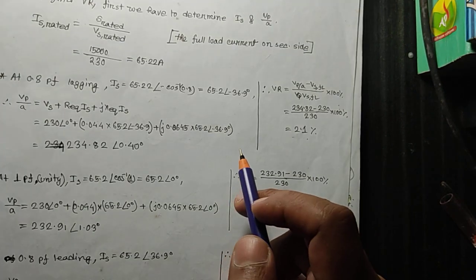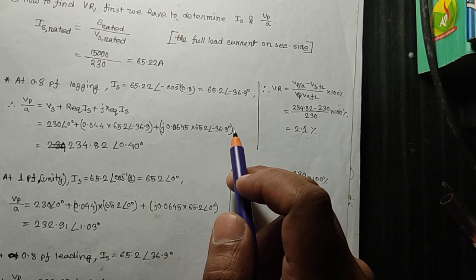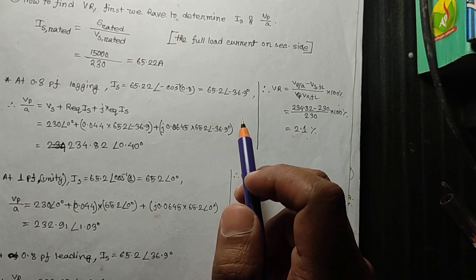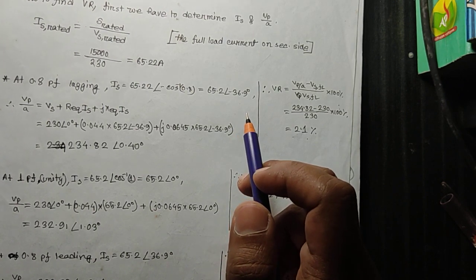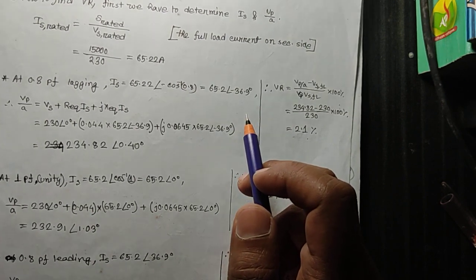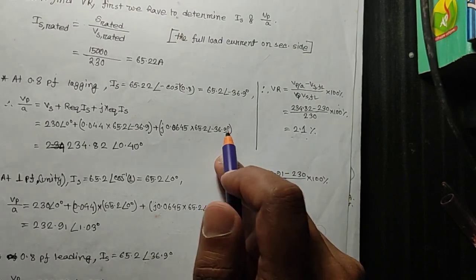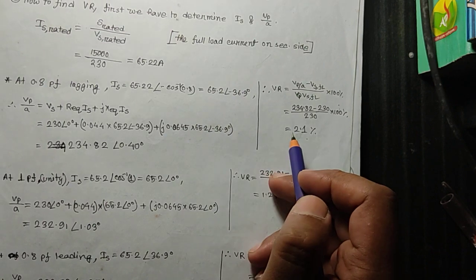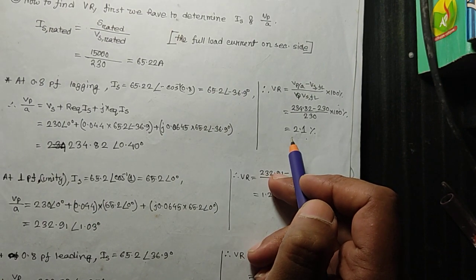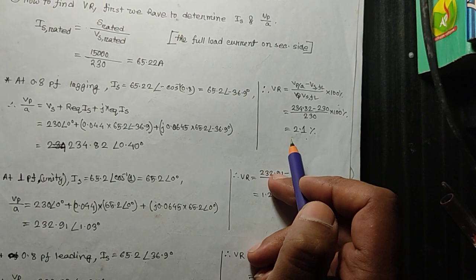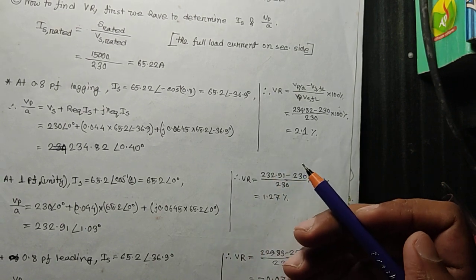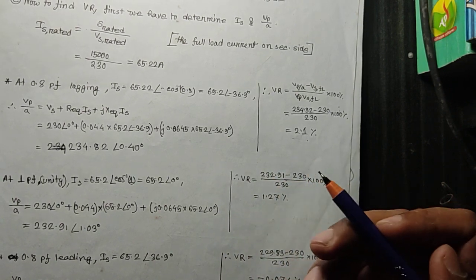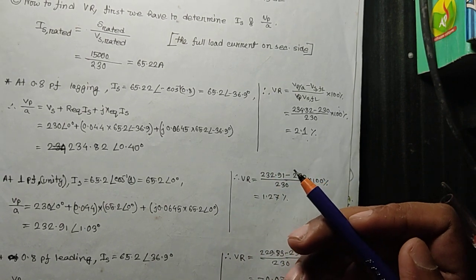So the two main things to remember: for a lagging power factor in a transformer, the voltage regulation is positive. For a leading power factor of a transformer, the voltage regulation is negative.